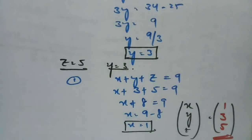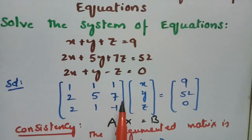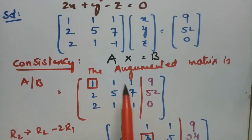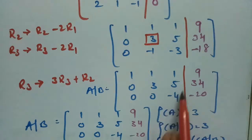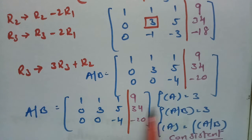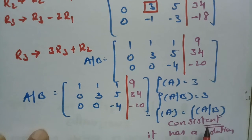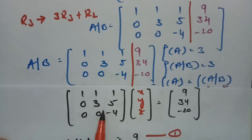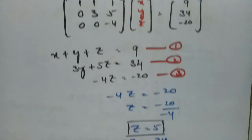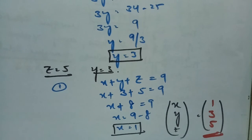This is how we solve the system of equations. First, write it as Ax equals B. Then frame the augmented matrix and check the ranks of A and [A|B]. Here both ranks equal 3, so the system is consistent. Writing back in the form Ax equals B and solving by back substitution, we get x equals 1, y equals 3, z equals 5. Thank you for watching — please like, share with friends, and subscribe to the channel.